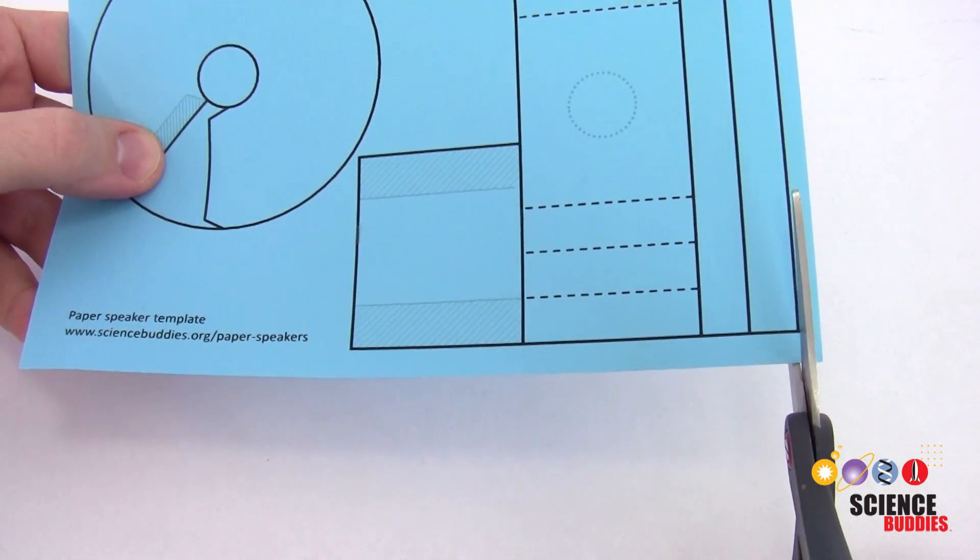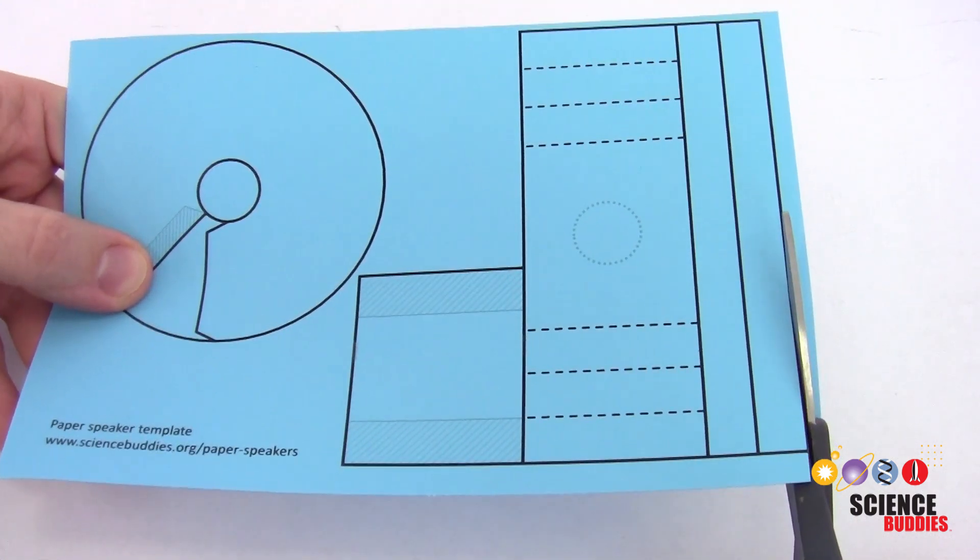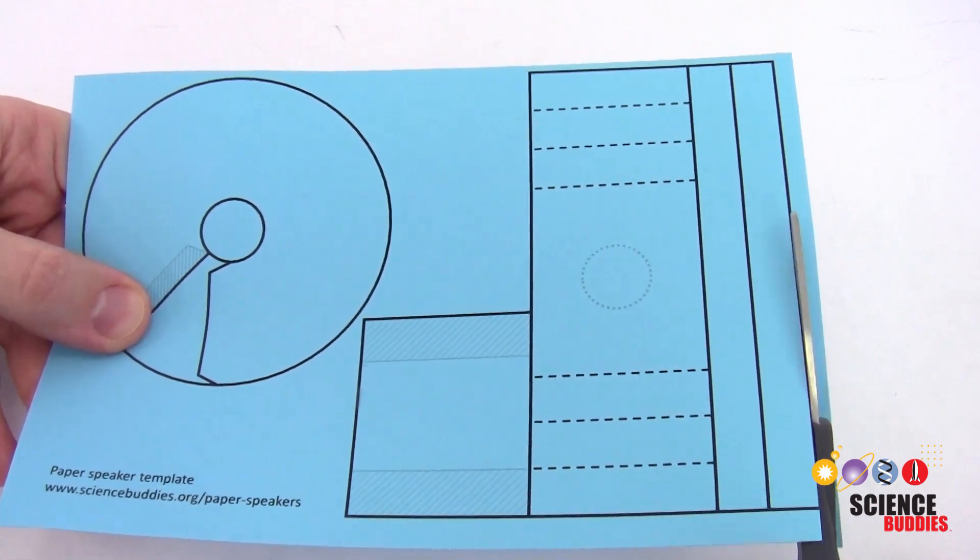So the first thing you'll do to start assembling your speaker is to take your paper speaker template and cut all of these shapes out along the dark lines, and we will then use glue to assemble the body of our speaker.